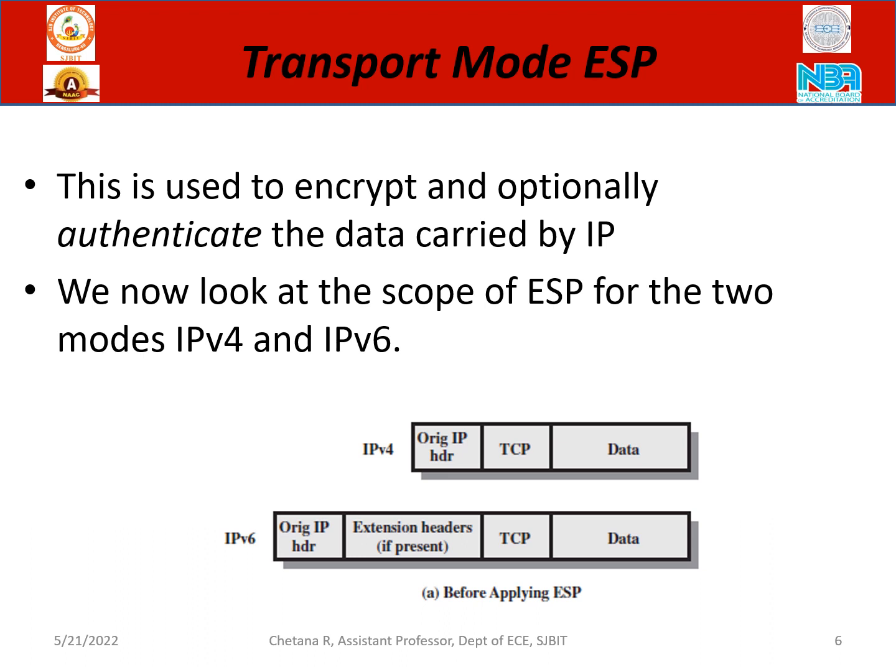We now look at the scope of ESP for the two modes, IPv4 and IPv6. In IPv4, you have the IP header, TCP, and data — normal, nothing much. In IPv6, it is an extended version. So you have the original IP header, extension headers, TCP, and data. Another extension header is included in IP version 6.